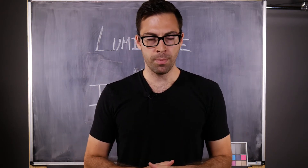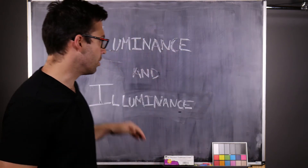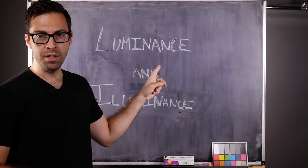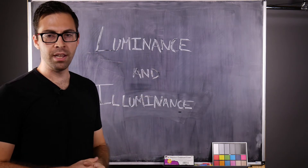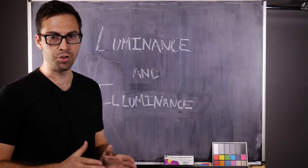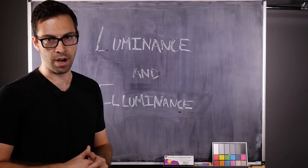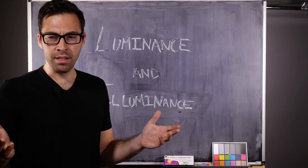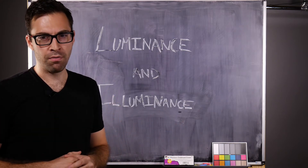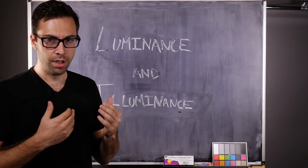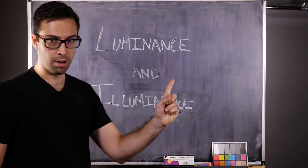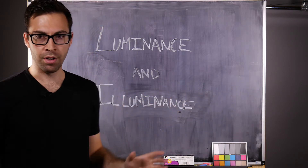As photographers, we're really worried about these two terms: luminance and illuminance. Luminance is the measure of the wavelength-weighted power per unit area of light traveling in a given direction. Essentially, what we're doing is trying to quantify the amount of light that is traveling through, emitted from, or reflected from a certain area.